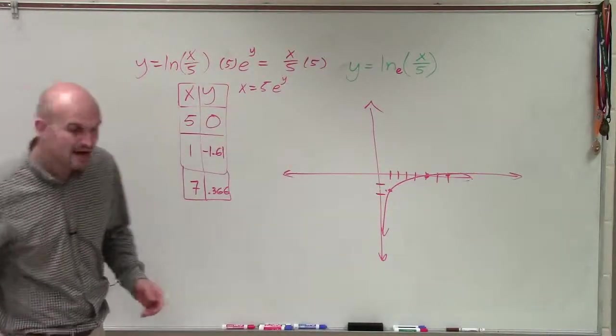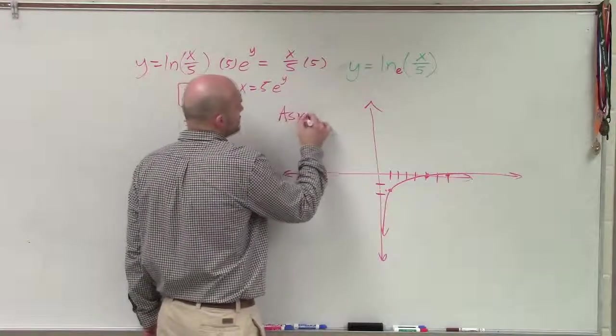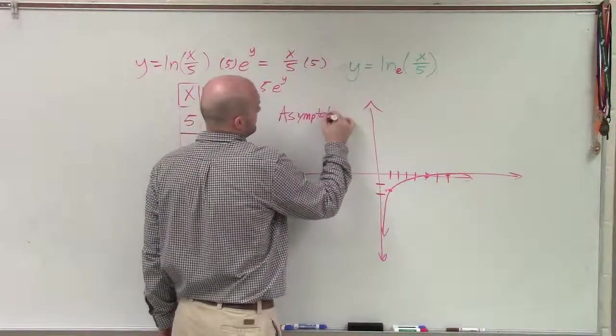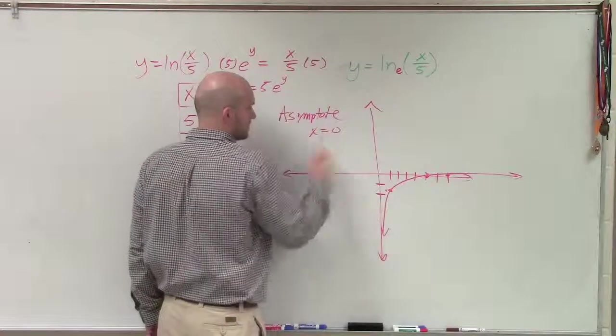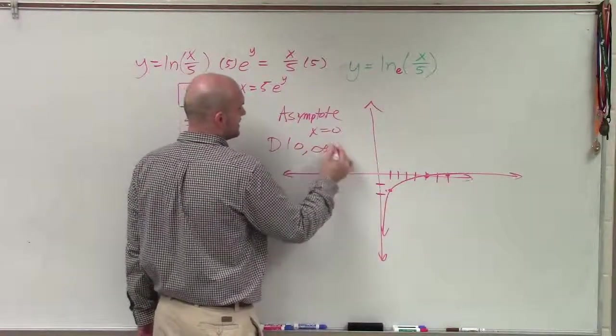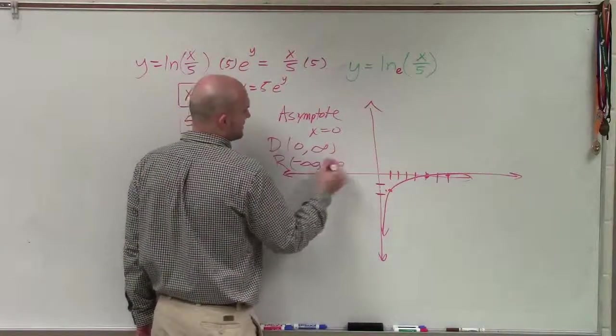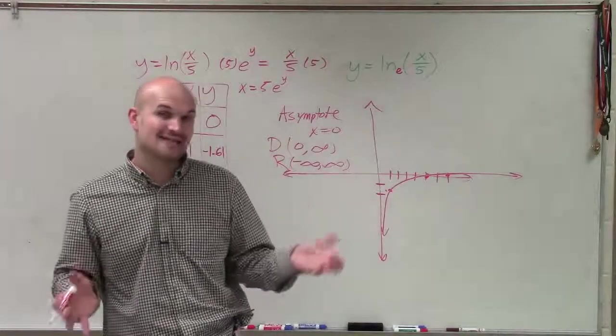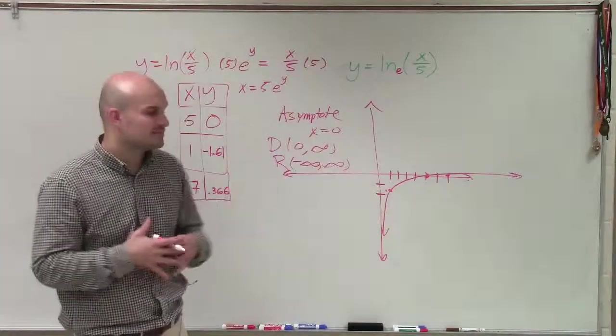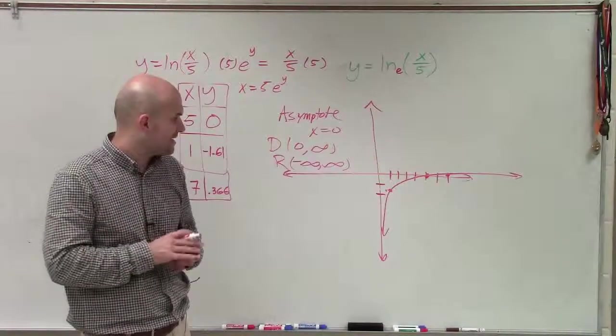However, let's take a look at now, how is my asymptote and everything else going to change? Well, my asymptote is still going to be at x equals 0. My domain is still going to be from 0 to infinity, and my range is still going to be negative infinity to infinity. The only thing that changes now, my x-intercept has now changed because the graph has expanded out.